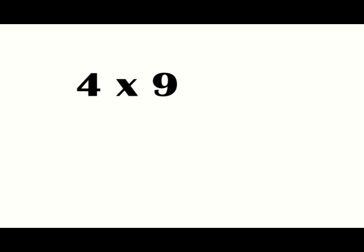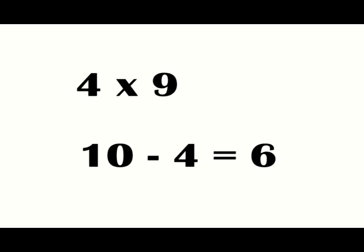So we'll take the first number we're multiplying with, in this case 4, and see how many it needs to equal 10. Now since 10 minus 4 is 6, we write 6 underneath the 4.